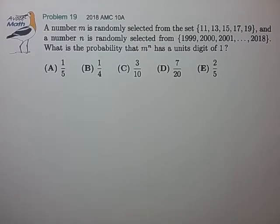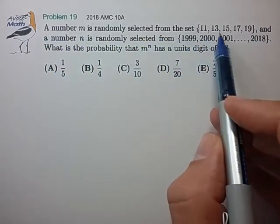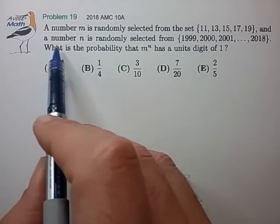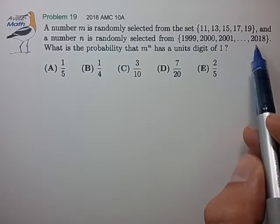Hi, this is problem 19 from the 2018 AMC 10A. A number M is randomly selected from the set 11 through 19, and a number N is randomly selected from 1999 to 2018.